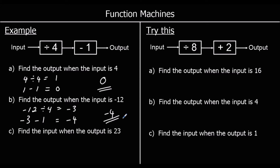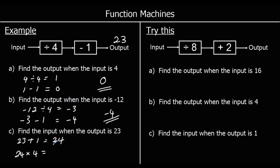Part C says find the input when the output is 23. So we're going to do the opposite and go backwards. The opposite of taking away 1 is adding 1: 23 plus 1 is 24. And the opposite of dividing by 4 is multiplying by 4. So 24 times 4: 20 times 4 is 80, and 4 times 4 is 16, so 80 and 16 make 96. So the input must have been 96. Check: 96 divided by 4 is 24, take away 1 is 23.